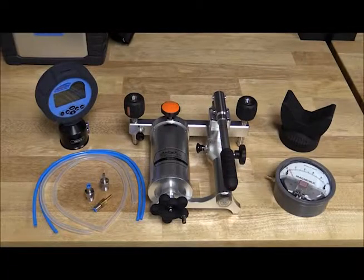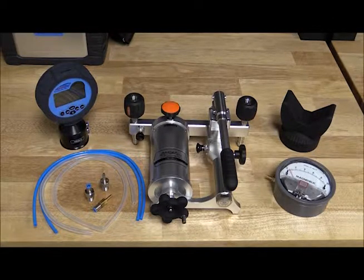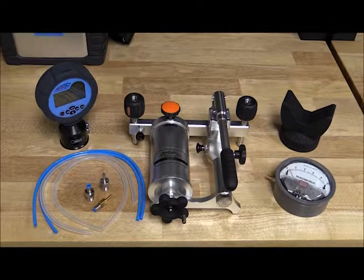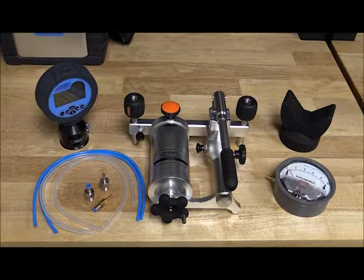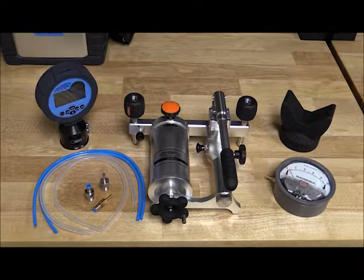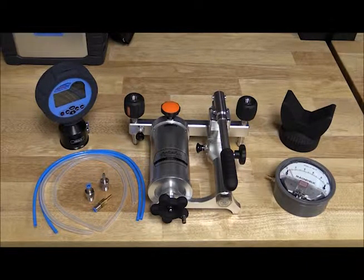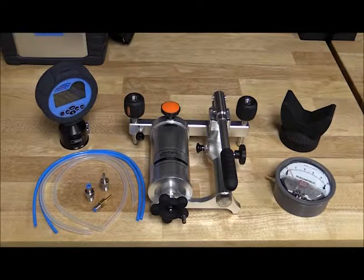In this example, we will use an Additel 912 pump to generate the pressure. The 901 pump could also be used. However, the 912 is better able to handle higher ranges and higher volume instruments for this type of setup. The Additel 681 differential gauge will be used as our accurate reference, and we will be calibrating a magnehelic differential pressure gauge that is 0-10 inches of water.